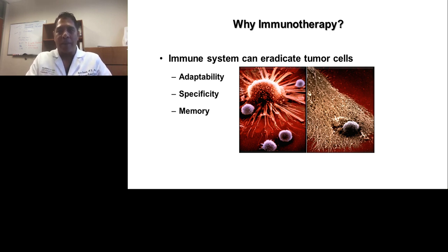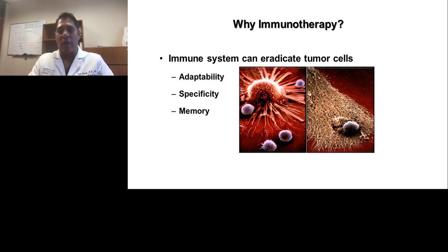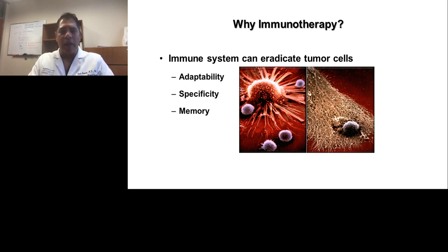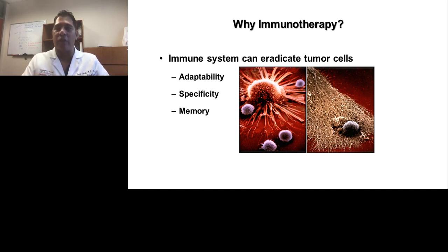So why immunotherapy? It's because the immune system can actually kill tumor cells. What you see on the left is a tumor cell surrounded by four T cells. These T cells will serially attack the cancer so that it eventually eradicates it, as shown on the right. T cells do this by taking advantage of three specific properties: adaptability, specificity, and memory. This is important because the memory leads to durable or even curative responses — a term I'll keep coming back to in future slides.